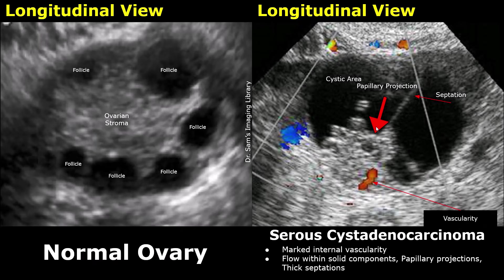Here is another case. The tumor has anechoic cystic areas with no low-level internal echoes. It contains a thin septation but has thick, irregularly shaped papillary projections which show vascularity on color Doppler.